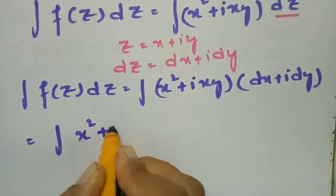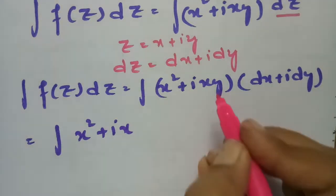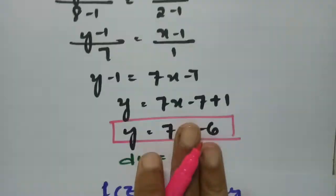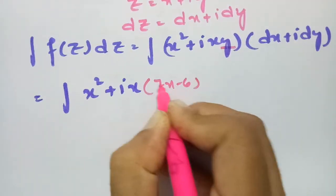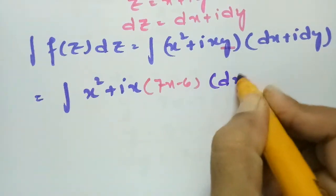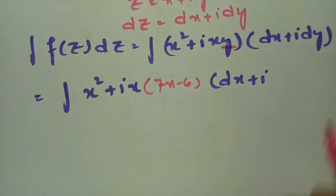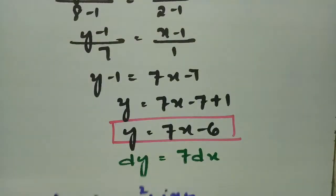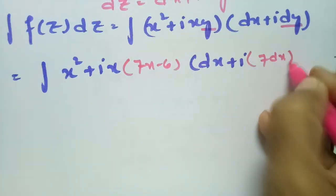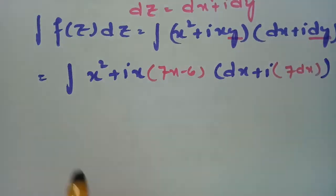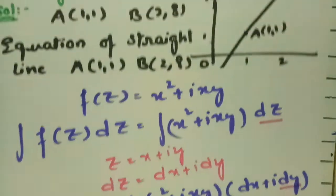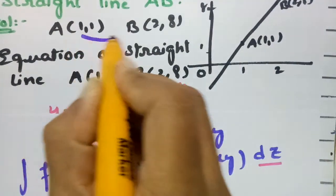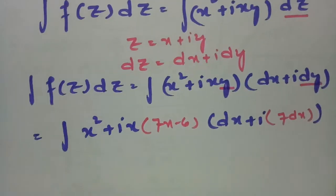Now I transform everything in terms of x. In place of y I write 7x − 6, and in place of dy I write 7·dx. So the expression becomes (x² + i·x·(7x − 6))·(dx + i·7dx). The x-limits are from 1 to 2, since x varies from 1 to 2.